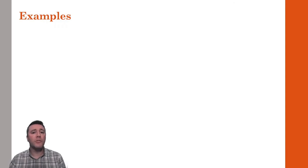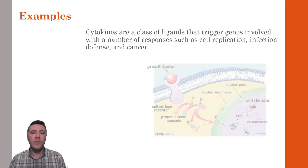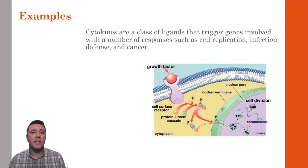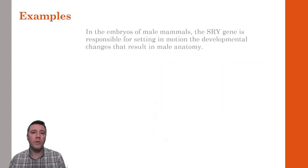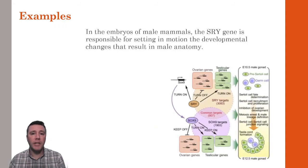Let's look at a few more specific examples of signal transduction. Cytokines are a family of dozens of ligands that activate a wide variety of genes responsible for things such as cell replication, defense from pathogens, and cells that have become cancerous. During the embryonic development of male mammals, a single gene found on the Y chromosome is responsible for activating genes that lead to the development of male anatomy, as well as the deactivation of genes associated with female anatomy.